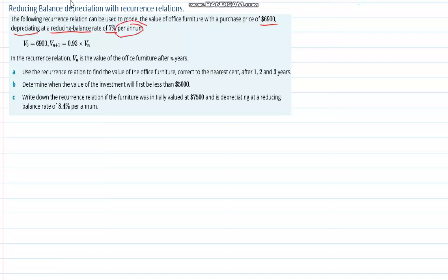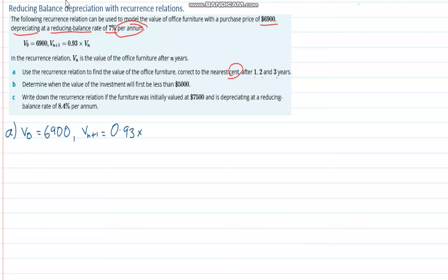The first thing we want to do is use the recurrence relation to find the value of the office furniture, correct to the nearest cent — two decimal places — after one, two, and three years. We have V0 = 6900, and the recurrence relation Vn+1 = 0.93 × Vn.